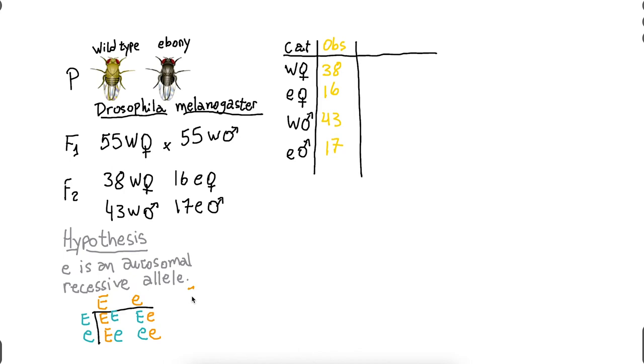So I expect 75% dominant, but half of those would be female and half of those would be male, if this allele has nothing to do with sex chromosomes. Same thing goes for our recessive. 25% should be recessive, but half of that should be male, and the other half should be female.